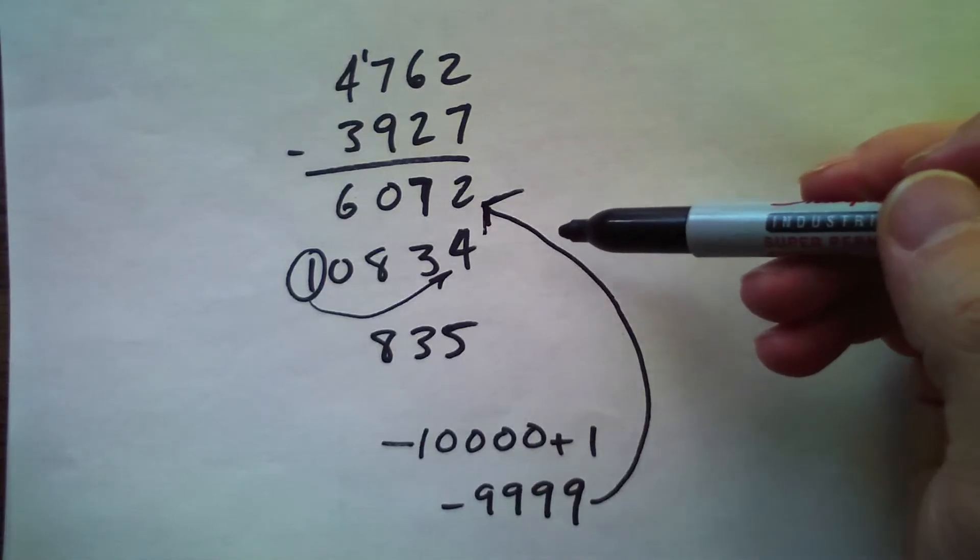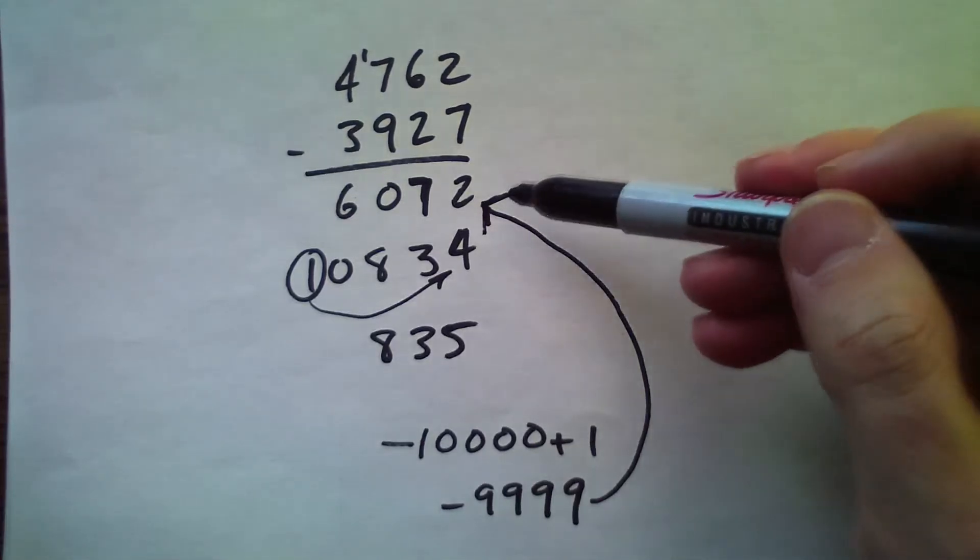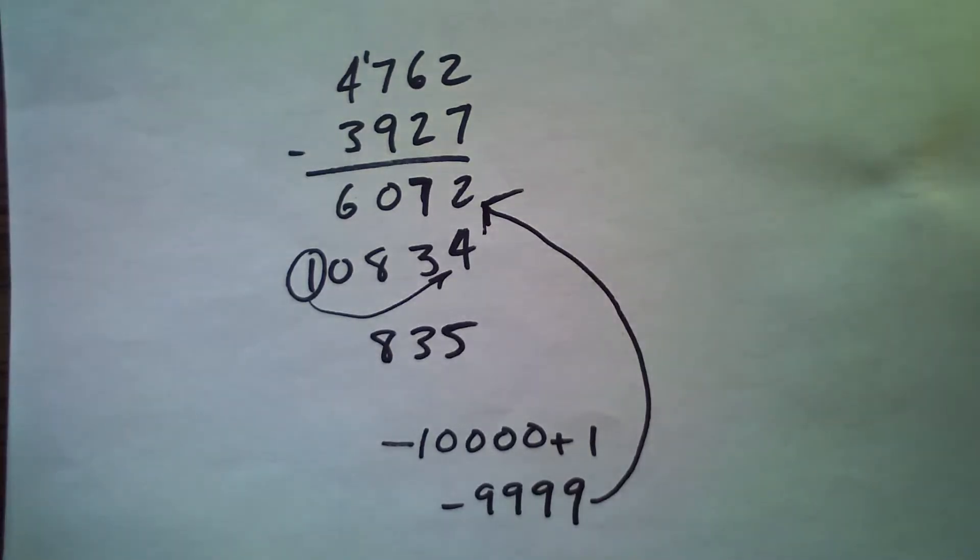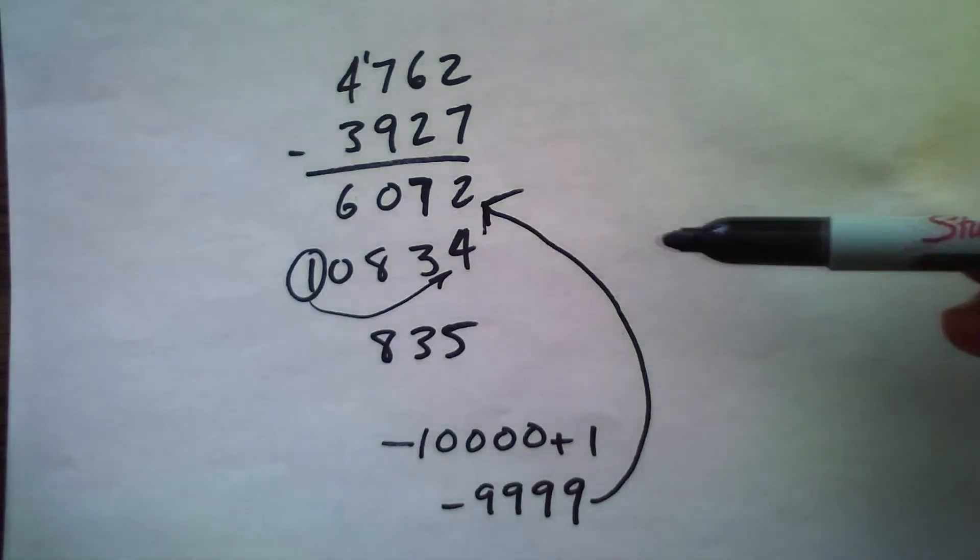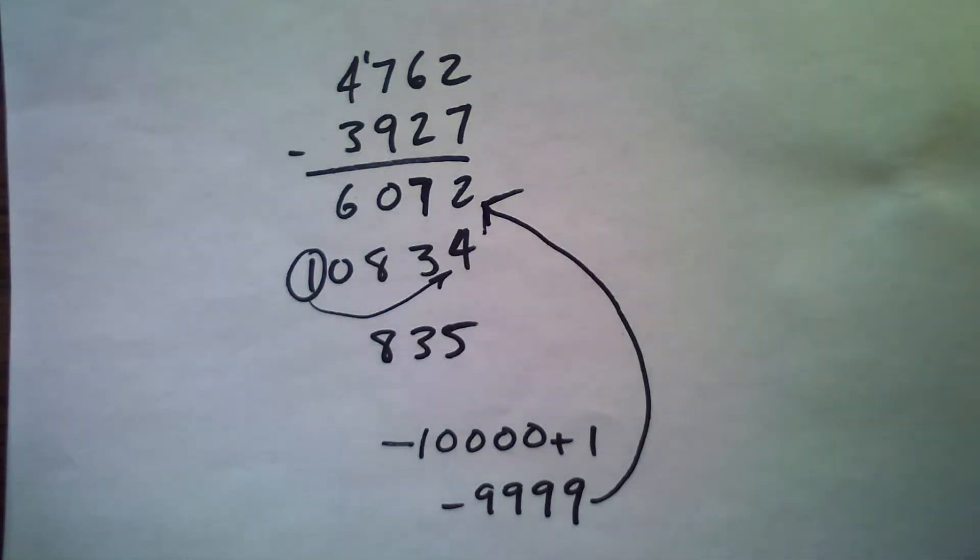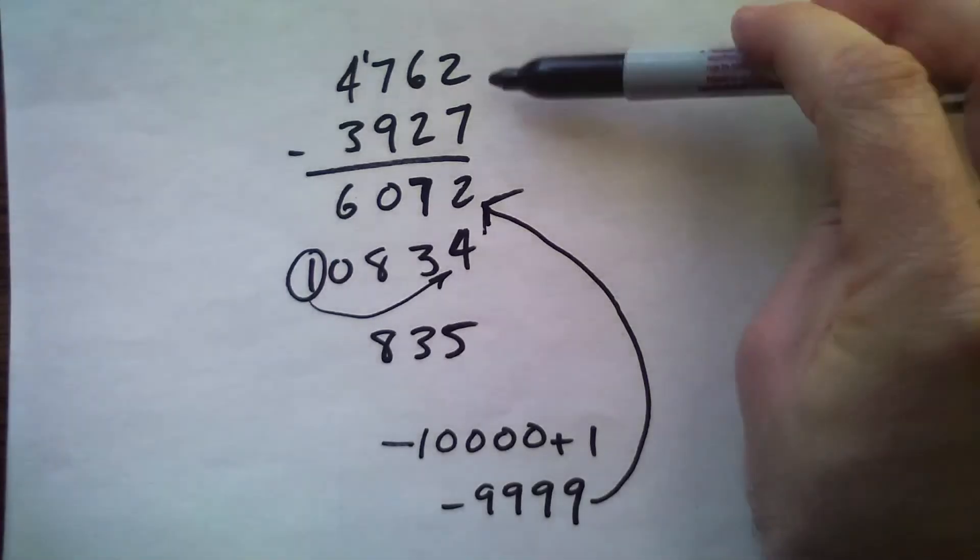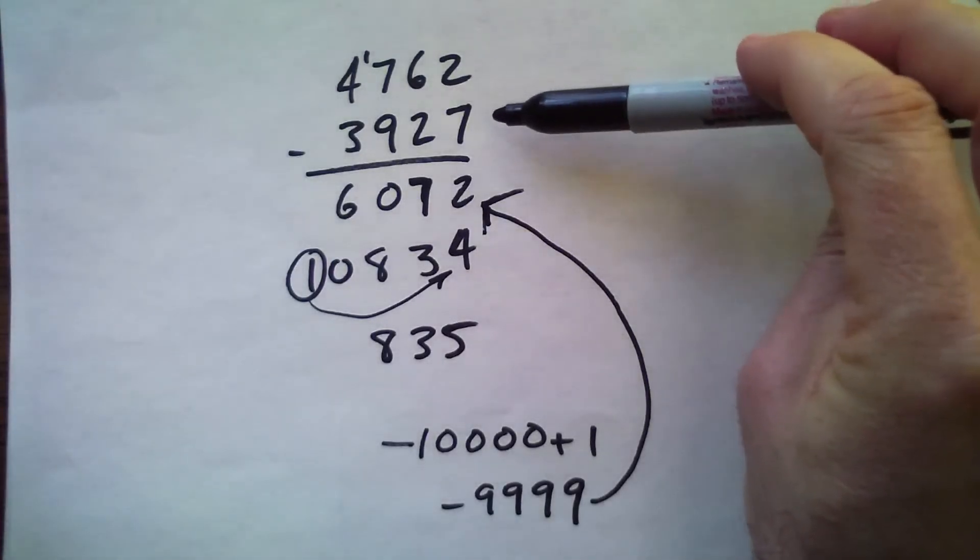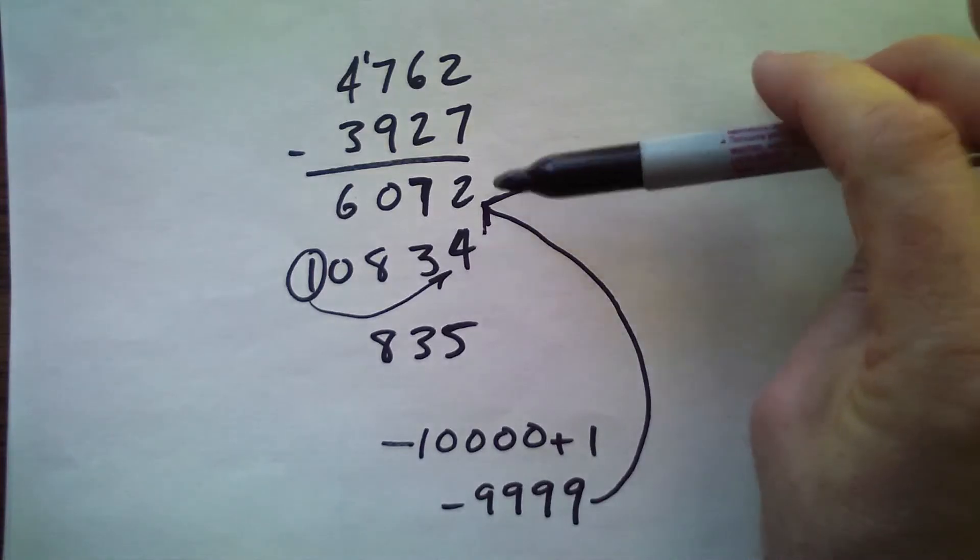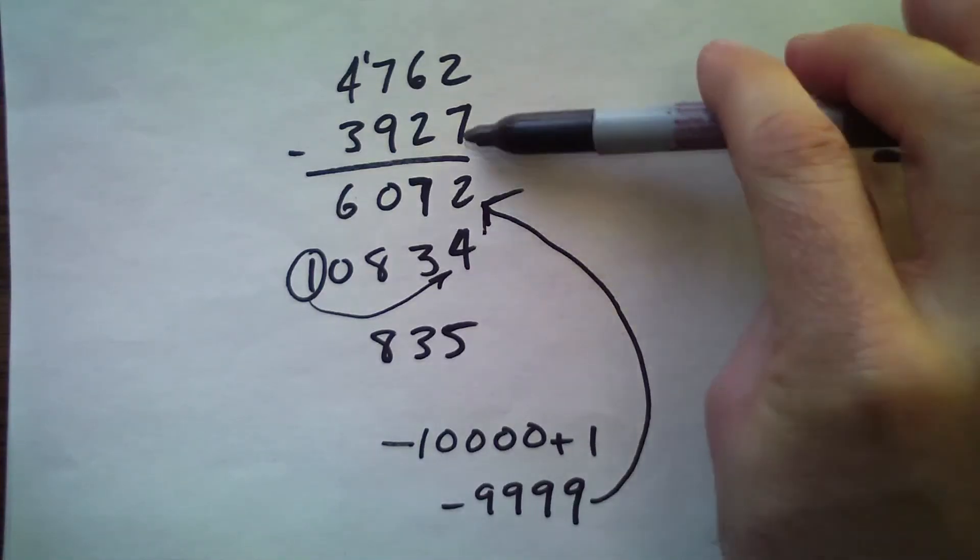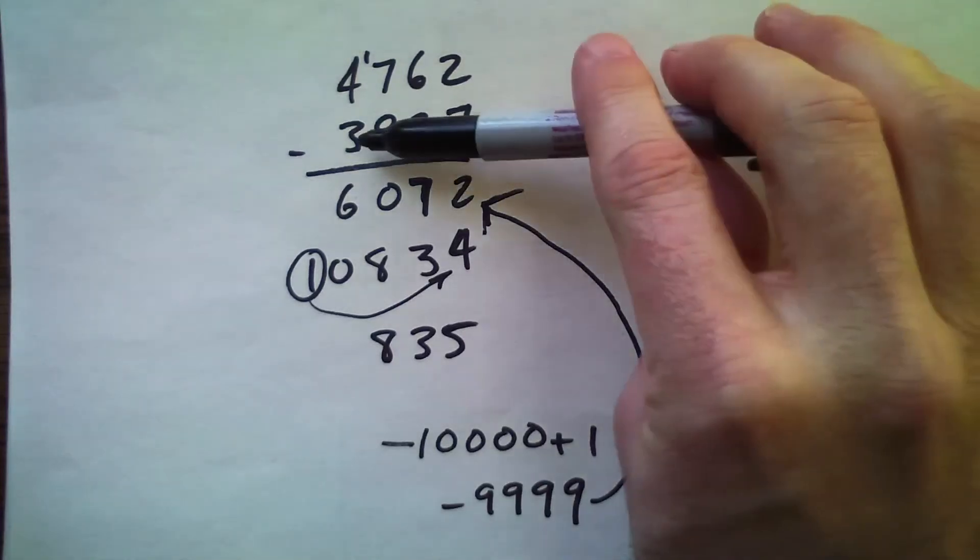But the point behind the complement algorithm, the reason why this is somewhat attractive, is the beauty of this algorithm is that there's no real difficult subtraction. You're subtracting from 9 along the way: 9 minus 7, 9 minus 2, 9 minus 9, and 9 minus 3.